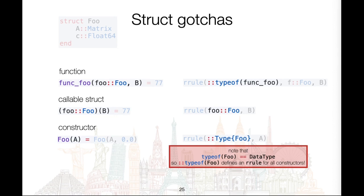Finally, the rrule for a constructor is the trickiest case. Capital-T Type{Foo} must be used. If lowercase typeof(foo) is used, the rrule is defined for all constructors, because lowercase typeof(foo) is a DataType. So take care when writing rules for constructors.